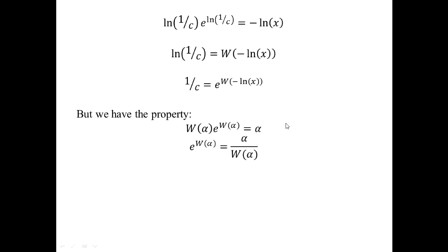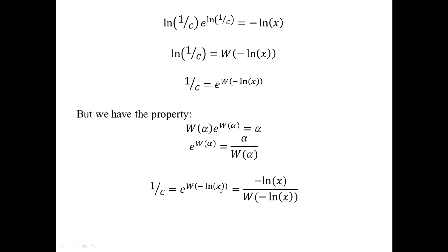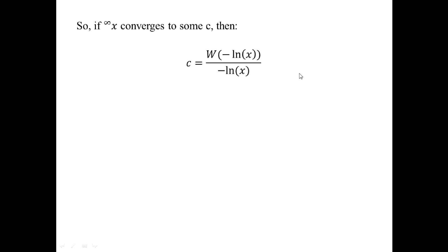The defining property of the Lambert W function is: W(α) · e^(W(α)) = α, which rearranges to e^(W(α)) = α / W(α). Using this, I rewrite 1/C = e^(W(−ln X)) as 1/C = (−ln X) / W(−ln X). Taking the reciprocal of both sides gives the final formula: C = W(−ln X) / (−ln X).